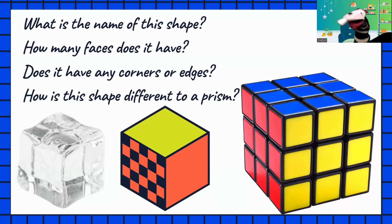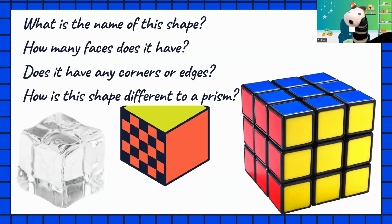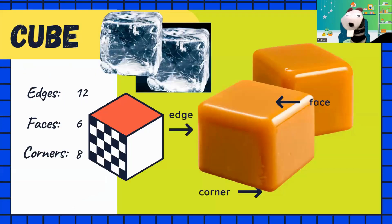How is this shape different than a prism? Okay, remember this is a cube. The cube has 12 edges, six faces. See the faces?